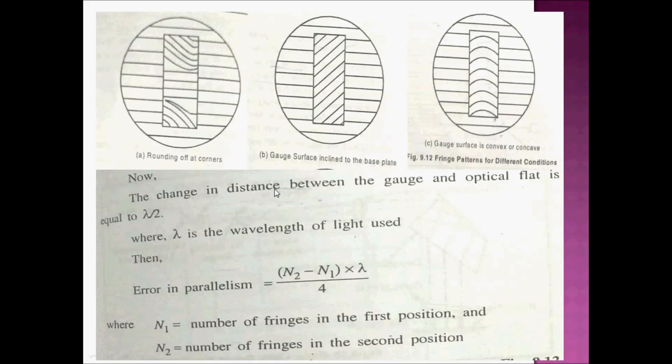Lambda is the wavelength of the light source. Error in parallelism equals n2 minus n1 times lambda divided by 4. That equation allows us to calculate the procedure output.